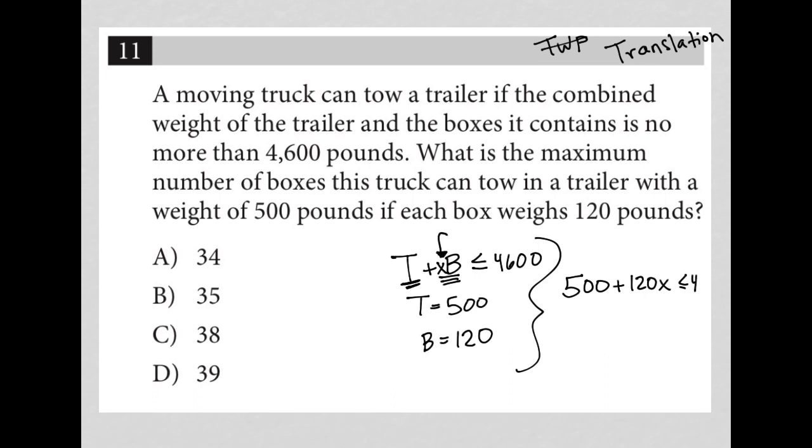Then I have less than or equal to 4,600. Now I just do my math. So subtract 500 from both sides of the equation. I'm left with 120X is less than or equal to 4,100.